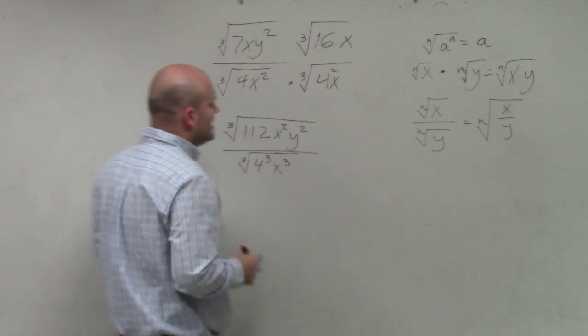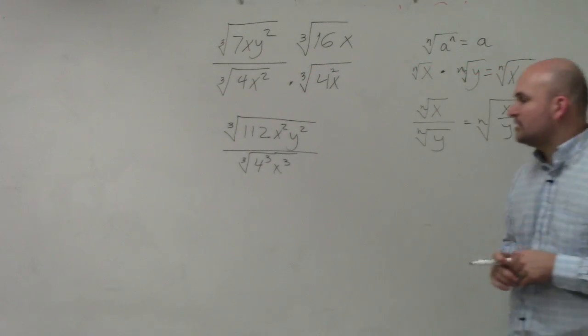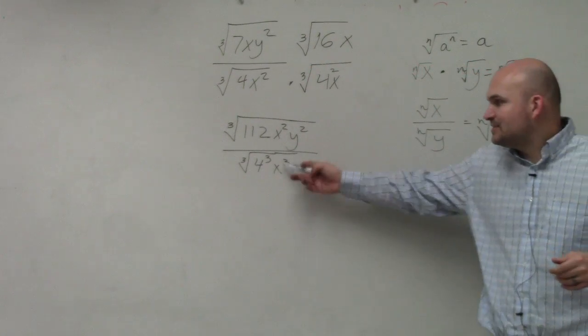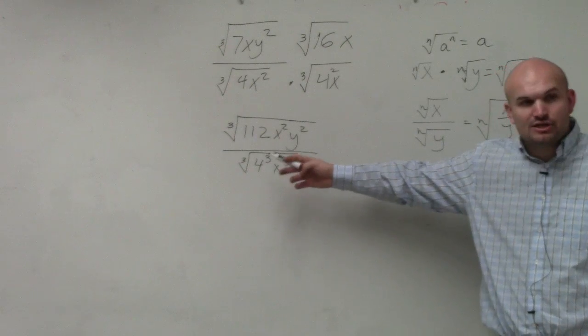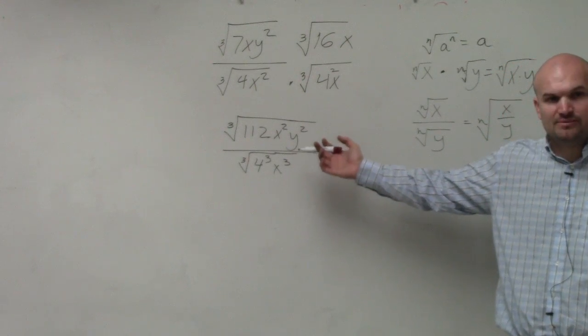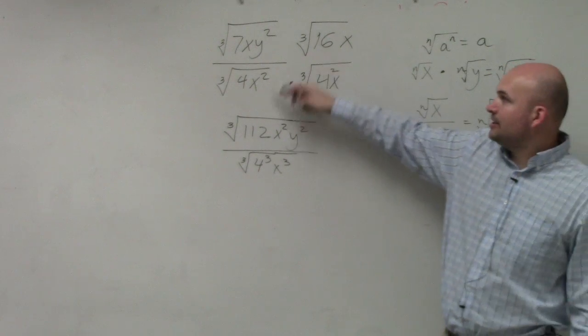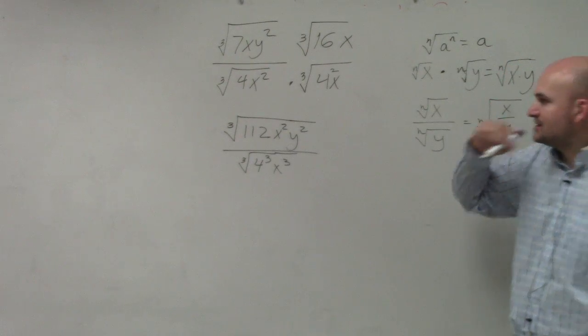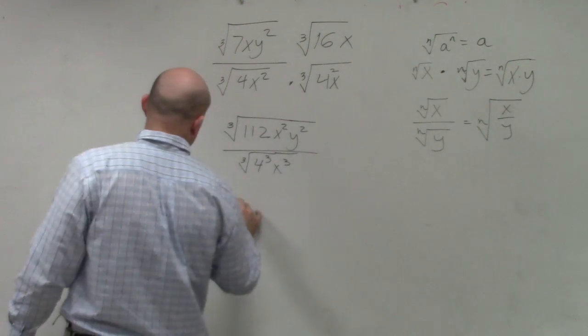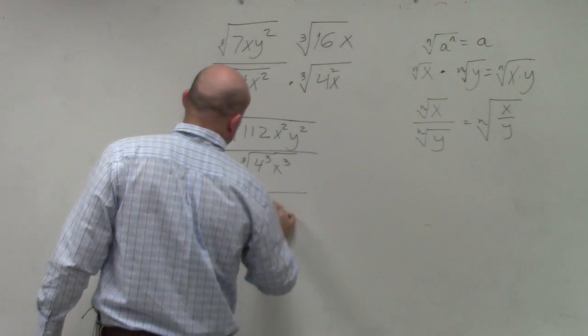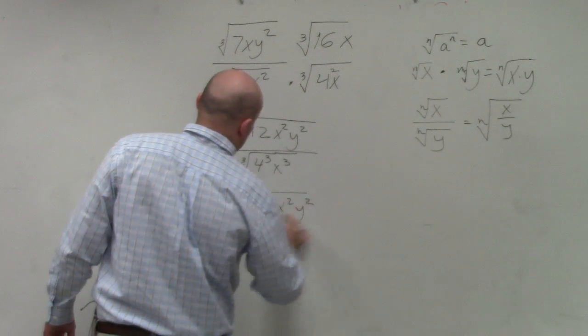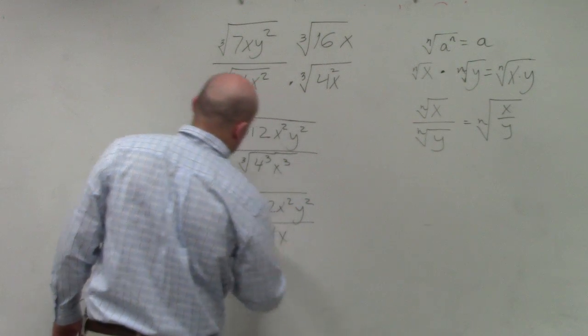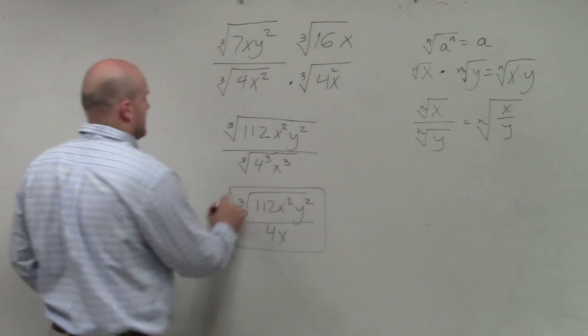So the reason why I like to write this out as cube root of 4 cubed x cubed is because you guys can see that you can take the cube root of 4 cubed and x cubed, right? And then up here, this just remains the exact same. So your final answer is that.